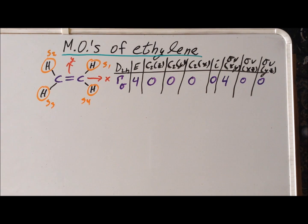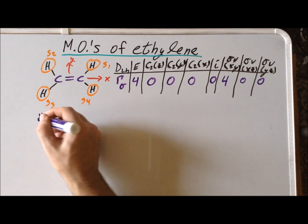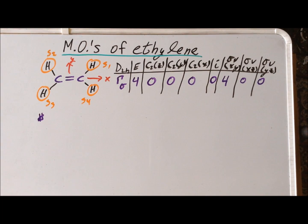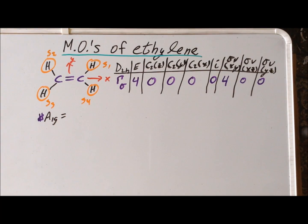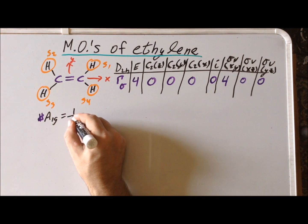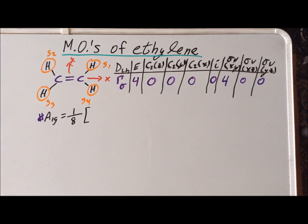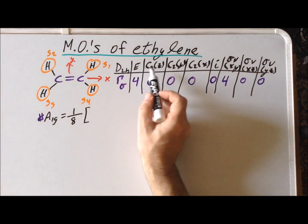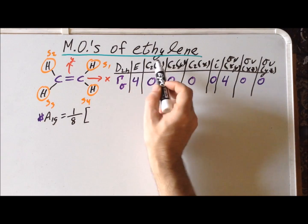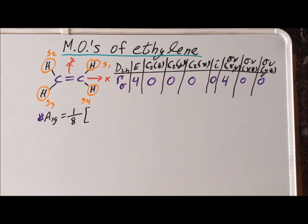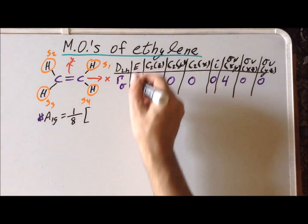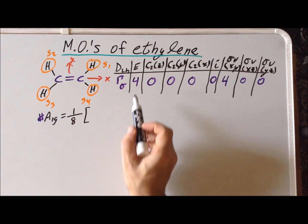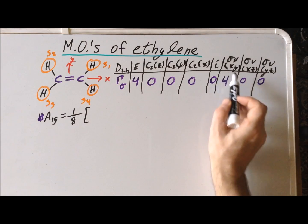The first irreducible representation that we're going to look for is A1g. Recall that the first step of the reduction formula is one over the order of the group, and the order of our group here is eight since there are eight symmetry operations. We can also expedite our solution since there is only one operation in each class. The only non-zero terms in our reducible representation are for the E operation and for sigma v xy.